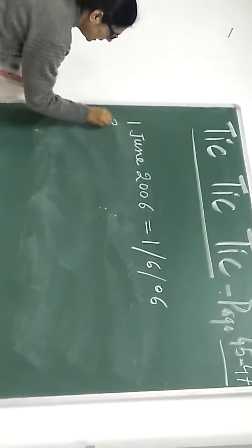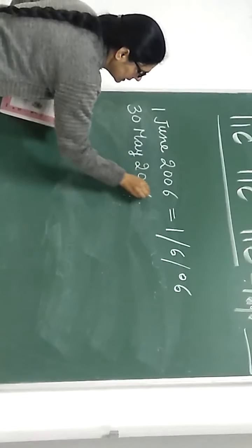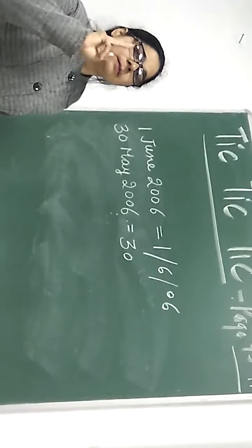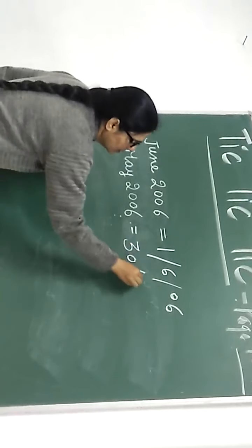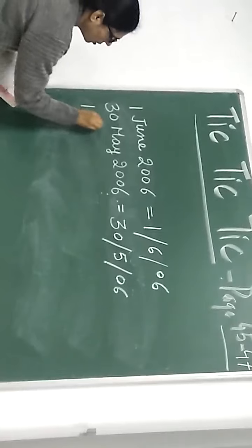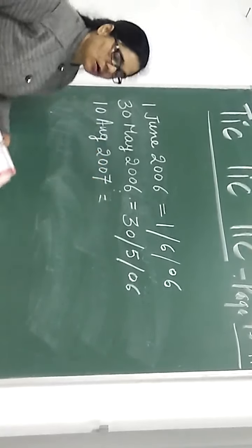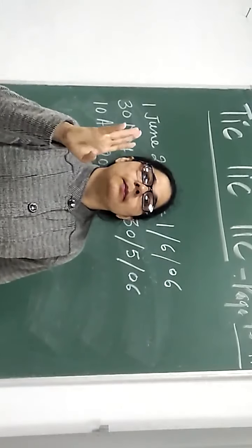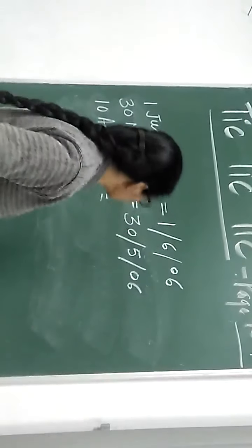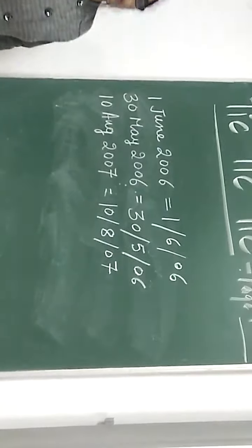Now 30th May 2006 is written as 30/5/2006. For 10th August 2006, August is the 8th month, so it is written as 10/8/2006. Now write these dates in numbers on your own.